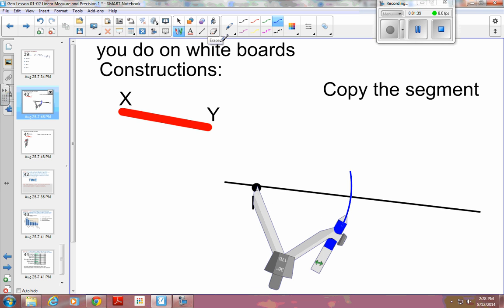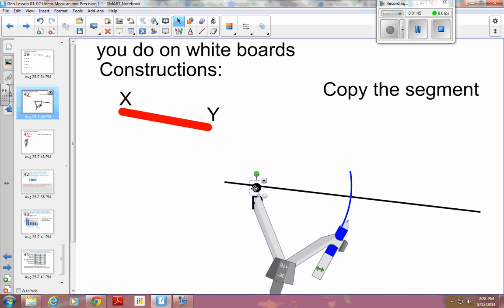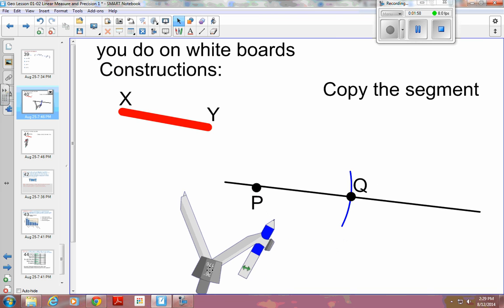And once I draw my arc, I can just put another point right here at the intersection, and now this segment here, and if I label that Q so that I've got something to talk about, so PQ would be congruent to XY. So that's how you copy a segment.